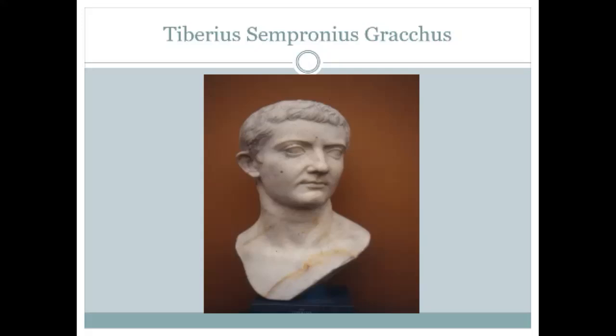Ager publicus was land in Italy which the Romans had taken control of as they expanded their state and which was not assigned to any of the subject peoples. There is actually a strong analogy for this type of land in British history — common lands used for grazing that were not owned by wealthy landowners. This public land had been gobbled up by wealthy latifundia owners, which was contrary to the law, because technically the entire Roman people were the owners of this ager publicus.